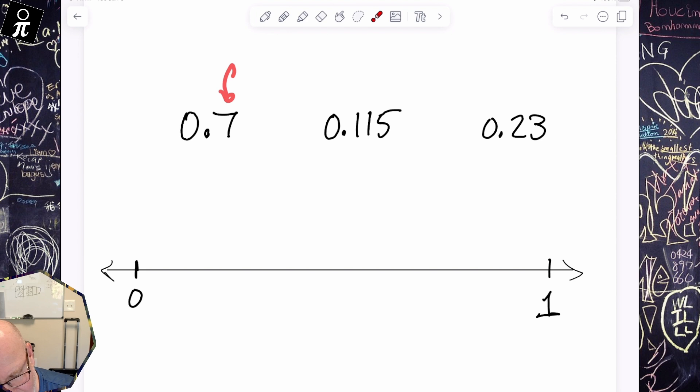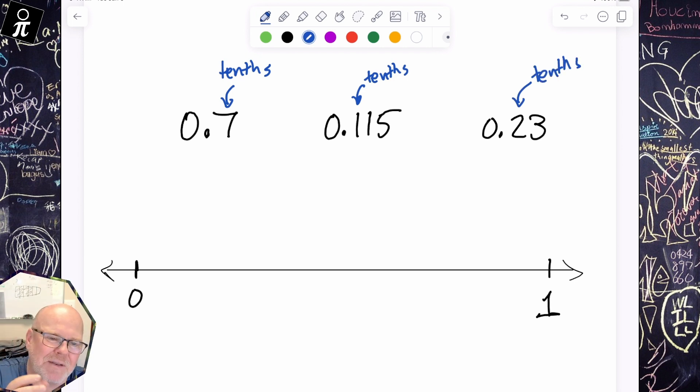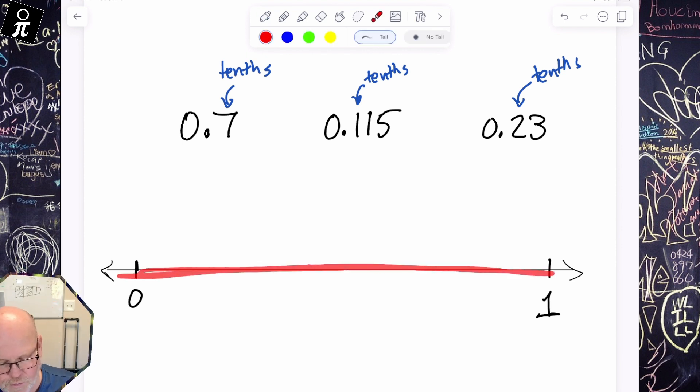So that first decimal place right there, that first decimal place is called the tenths. And basically what that means, there's my tenths right here. So 0.7, that seven being in the tenths place means I need to cut the interval from zero to one into 10 equal sized pieces and then move over seven of those pieces.